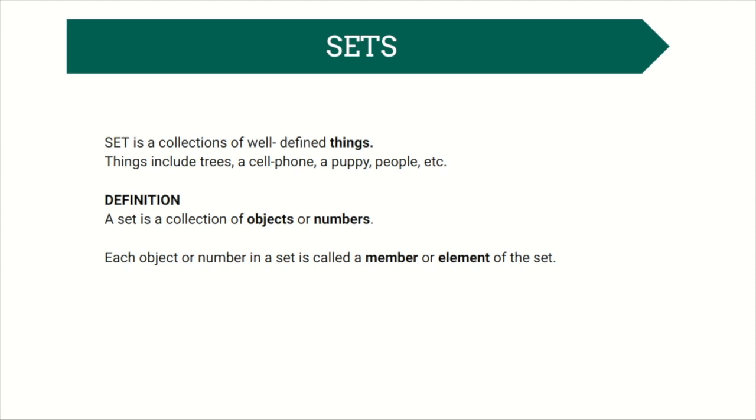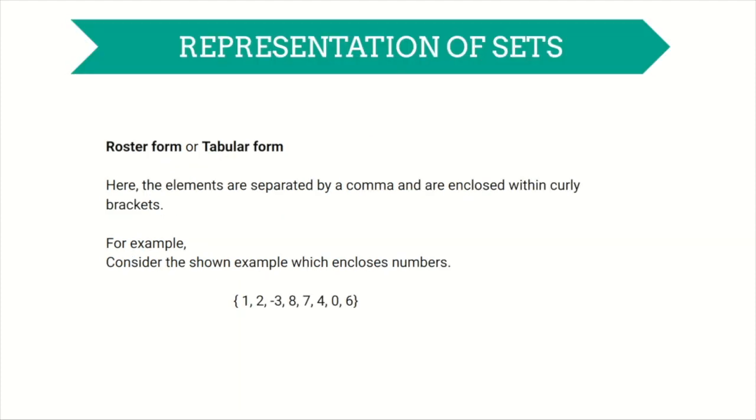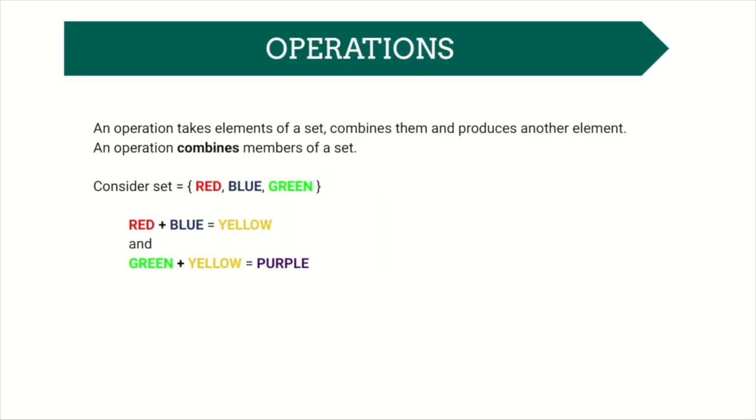Each object or number in a set is called a member or element of the set. There are many ways of representing a set. Roster form or tabular form is one of them which is used widely. Here, the elements are separated by a comma and are enclosed within curly brackets. For example, consider the shown example which encloses numbers.